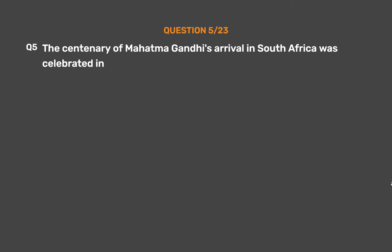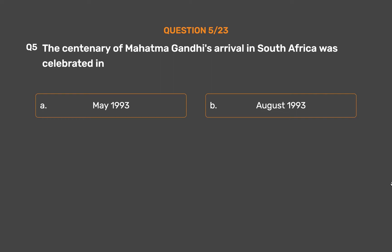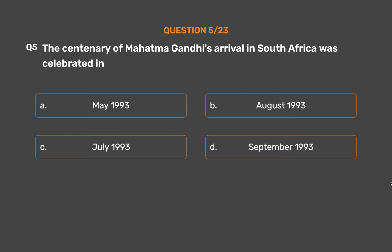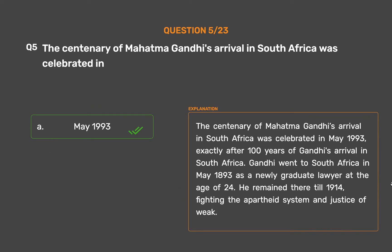Question No. 5. The centenary of Mahatma Gandhi's arrival in South Africa was celebrated in: Option A, May 1993; Option B, August 1993; Option C, July 1993; Option D, September 1993. The correct answer is Option A, May 1993. The centenary of Mahatma Gandhi's arrival in South Africa was celebrated in May 1993, exactly 100 years after Gandhi's arrival. Gandhi went to South Africa in May 1893 as a newly graduated lawyer at the age of 24.